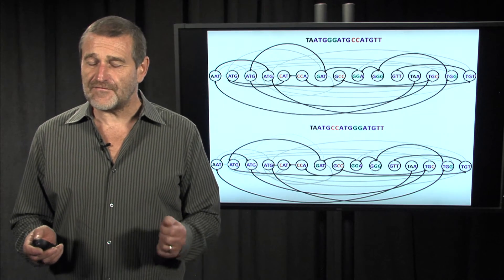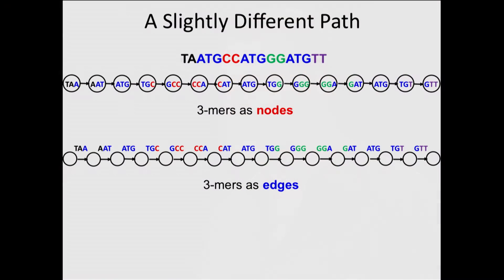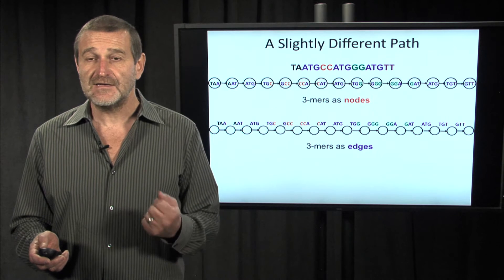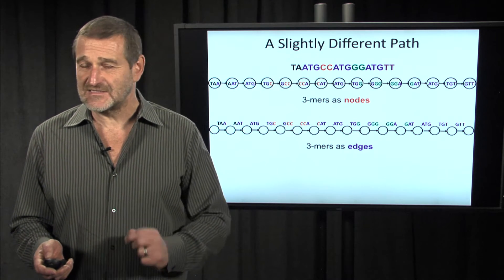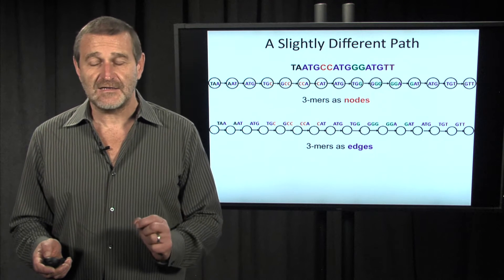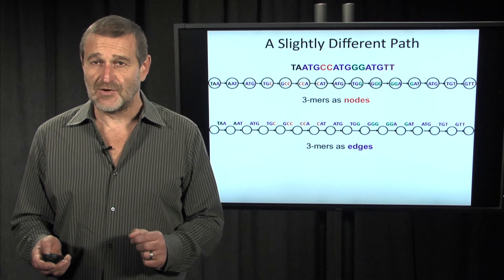I will do something different. First, I will slightly modify the graph. Remember, in the Hamiltonian path problem, we put three-mers into nodes of the graph. In contrary, I will represent every edge of my graph as a three-mer. Since it's almost a cosmetic difference, it's not clear why I care so much about this difference at the moment.